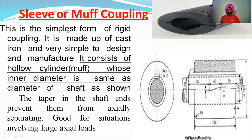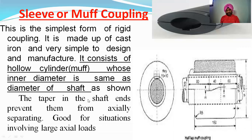Sleeve or muff coupling is the simplest form of rigid coupling. It is made of cast iron and is very simple to design and manufacture. It consists of a hollow cylinder known as a muff, whose inner diameter is the same as the diameter of the shafts being connected. The shafts are inserted from both sides into the sleeve.